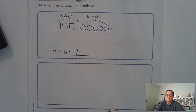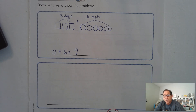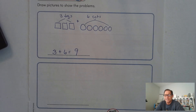Now here's the second problem. I want you to draw a model and write the addition problem for it, then pause the video. On Tuesday, Tony saw six dogs and three cats. How many animals did he see? Draw your model and write your addition fact, and pause the video while you do that.